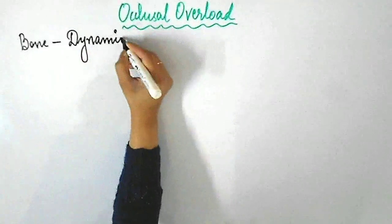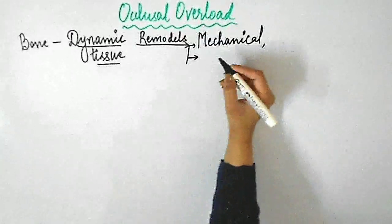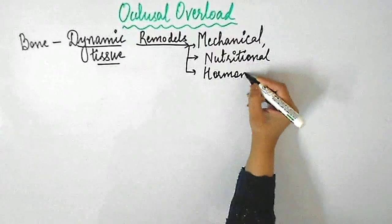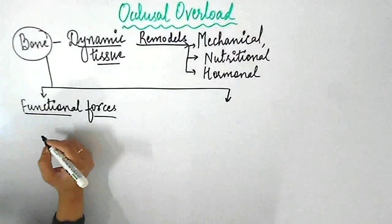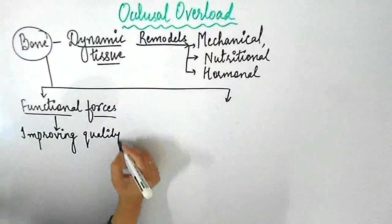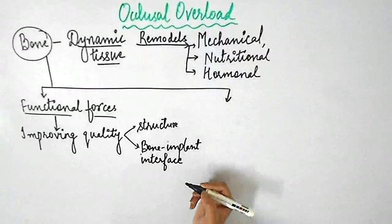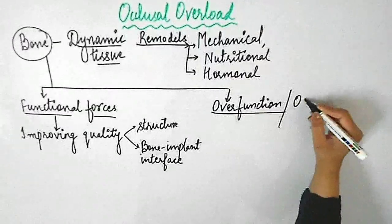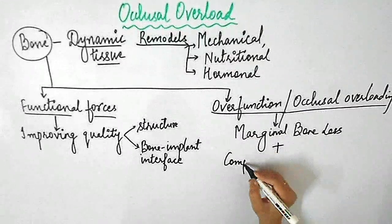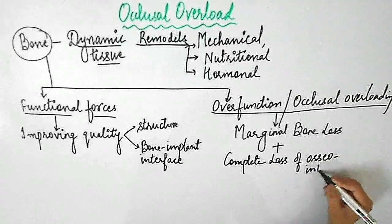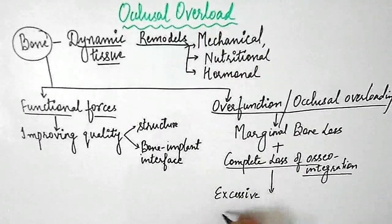Starting with occlusal overload — bone is a dynamic tissue that remodels remarkably in response to mechanical, nutritional, or hormonal influences. It responds favorably to functional forces by improving the quality of its structure and the quality of the bone-implant interface. However, overfunction beyond the threshold of tolerance of the implant structures could result in marginal bone loss as well as complete loss of osseointegration, particularly when excessive stresses are applied on an immature bone-implant interface in the early stages of osseointegration.